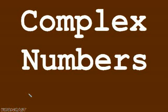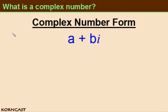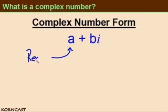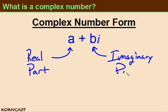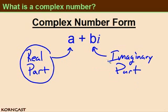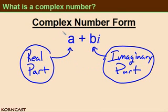In this screencast, we're going to take a look at complex numbers. What is a complex number? Well, a complex number is a number that's in this form, where a is the real part and bi is the imaginary part. So together, the real part and the imaginary part make up a complex number.